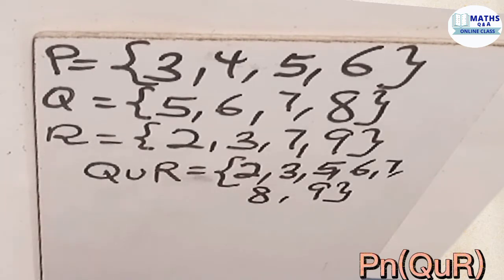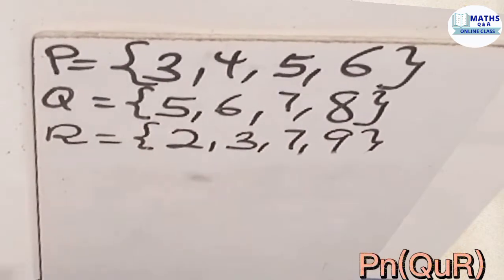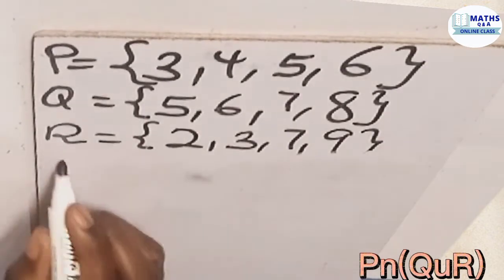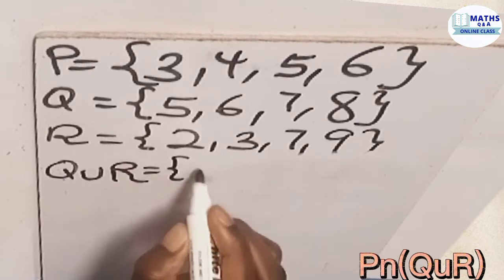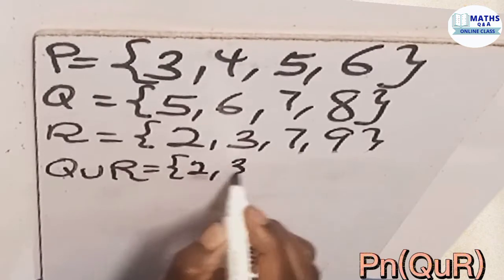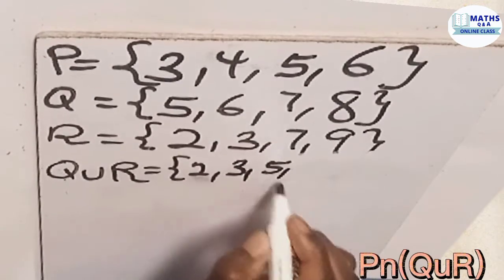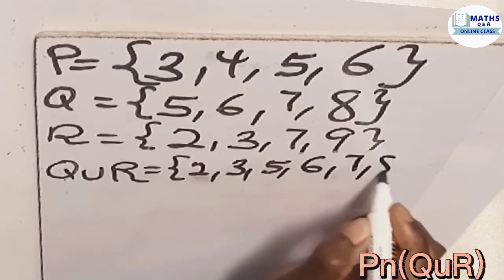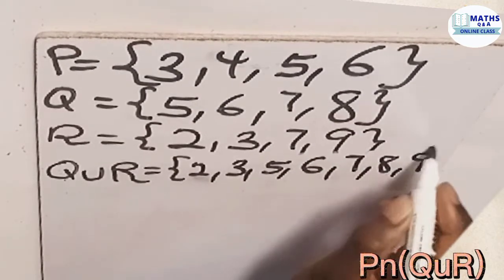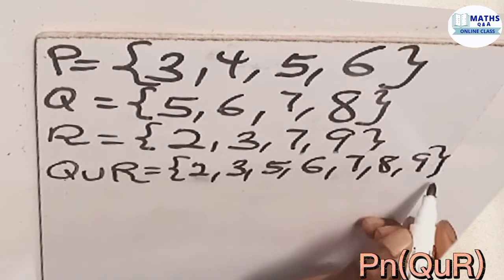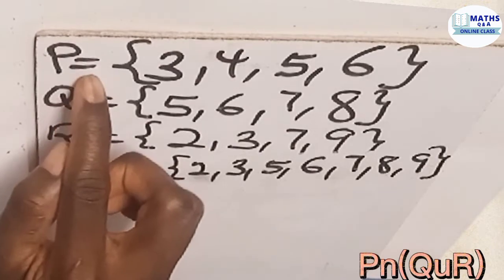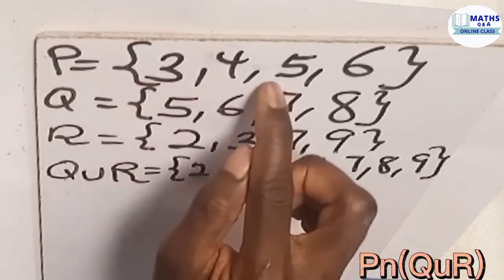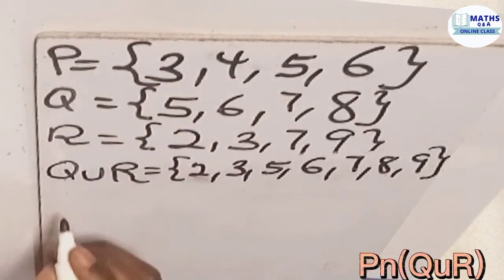So these are the members of Q union R. So we have Q union R and they are 2, 3, 5, 6, 7, 8, 9. Good. So these are the members of set Q union R. And then we have set P here which is 3, 4, 5, 6.